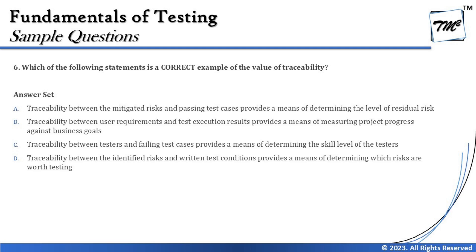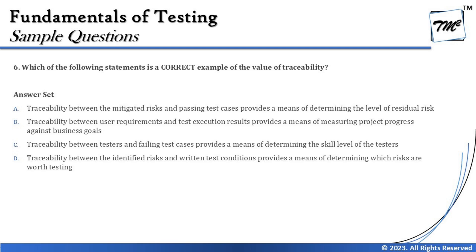Option B says traceability between user requirements and test execution results provides a means of measuring project progress against business goals. This looks correct — user requirements linked with test execution results help management understand how executions are covering the requirements, what success has been achieved, and how much more remains. Test execution results display pass rate and fail rate, and based on that we can measure project or testing progress with respect to business goals linked to requirements.